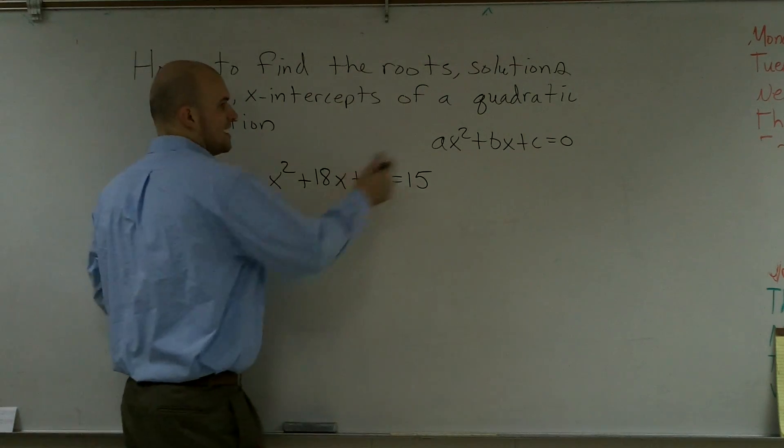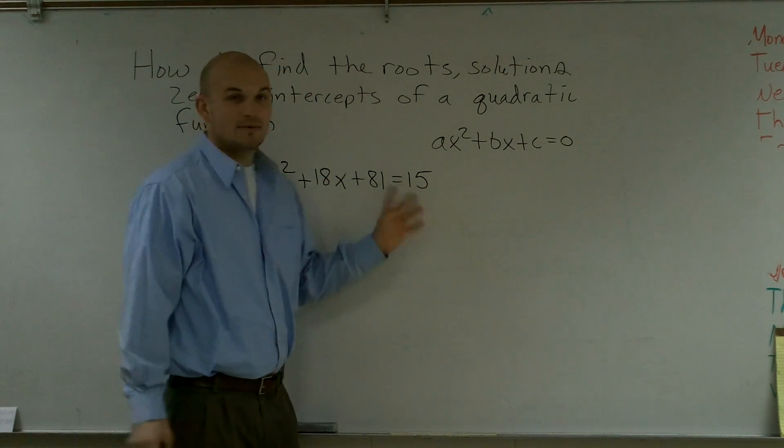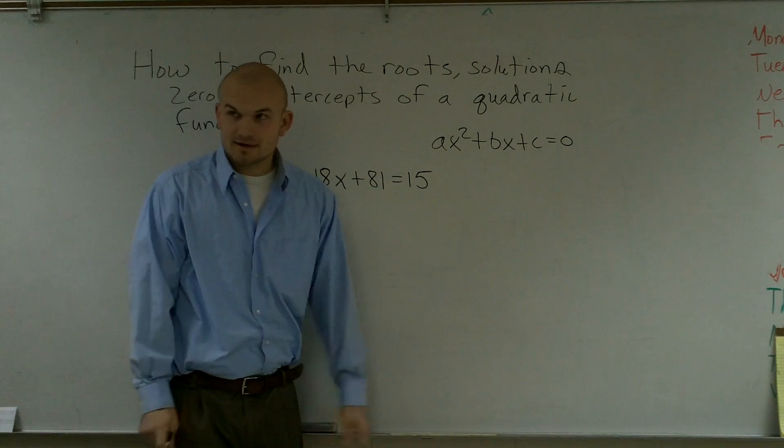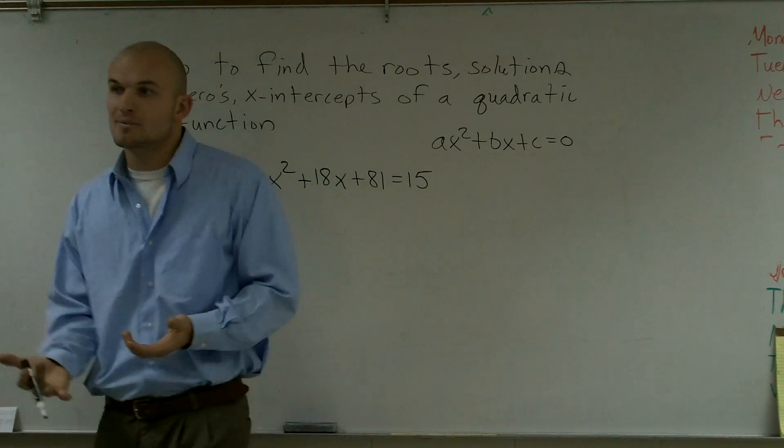Now, we have an a, b, and a c, and instead of equaling zero, we have this 15 here. So now we have an abundance of numbers.